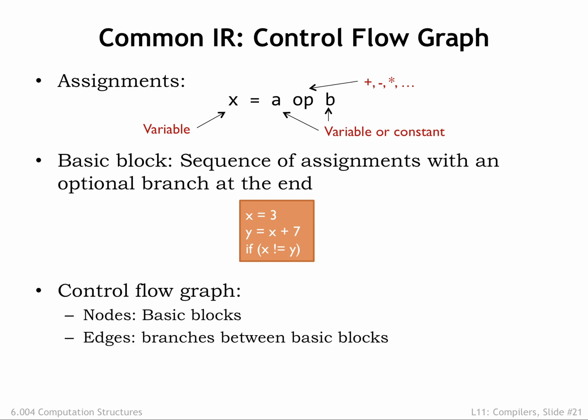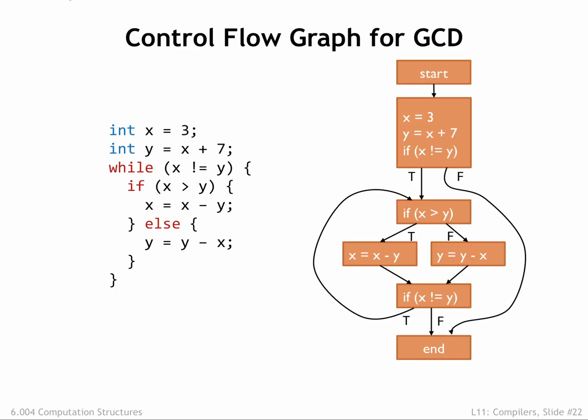The edges of the graph indicate the branches that take us to another basic block. For example, here's the control flow graph for GCD. If a basic block ends with a conditional branch, there are two edges, labeled T and F, leaving the block that indicate the next block to execute depending on the outcome of the test. Other blocks have only a single departing arrow, indicating the block always transfers control to the block indicated by the arrow.